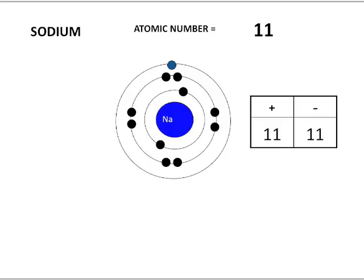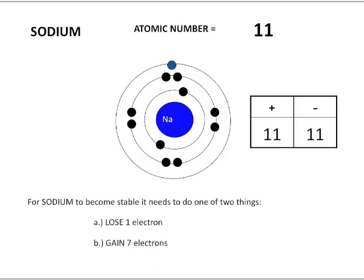We know sodium has one valence electron because it's in group number one. For sodium to become stable, it needs to do one of two things: it can either lose one electron or gain seven electrons. Most likely, losing the one electron is more energetically favorable. So let's say bye-bye to that valence electron — there it goes.